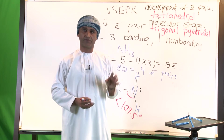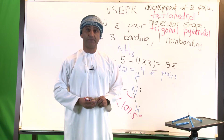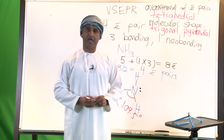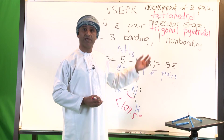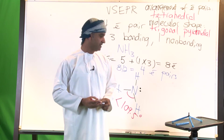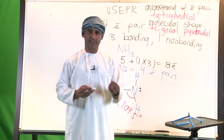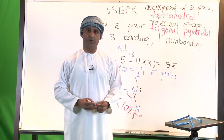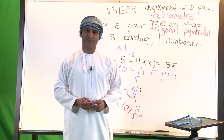To conclude, ammonia is an example of a four electron pair case where three are bonding and one is non-bonding. The orbital shape is tetrahedral, while the molecular shape is trigonal pyramidal. The bond angle is less than 109.5° — scientifically represented as 107° — due to the presence of the lone pair and the minimization of electron pair repulsions.